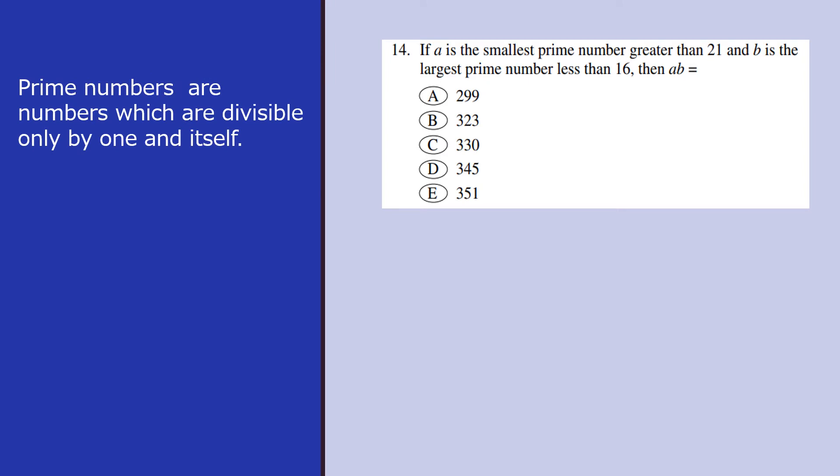We know that prime numbers are numbers which are divisible only by 1 and itself. So we know that 1 is not prime. We start with 2, 3, 5, 7, 11, 13, 17, 19, 23, etc. These are all the prime numbers. These are a few from the beginning.